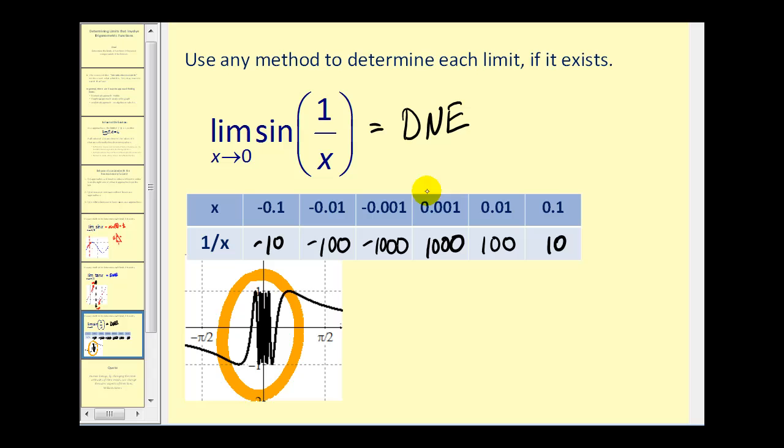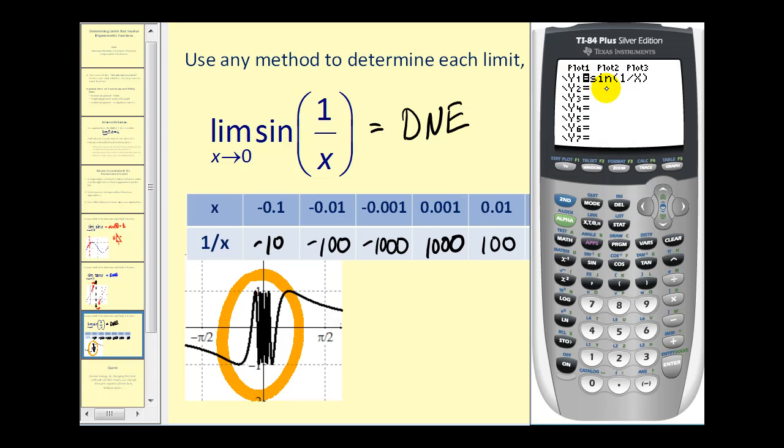Let's take a look at this on our graphing calculator. In y1, we have sin(1/x). Let's adjust our window so that the x interval is between negative three and positive three, and the y interval is between negative two and positive two. Let's graph it. We can see as x gets closer to zero, it starts to alternate.